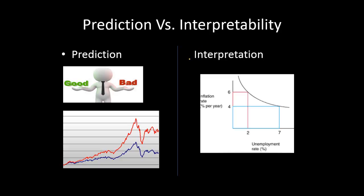When we build predictive models or any statistical model, the objective of building models could be categorized into two types, with two subtypes in predictions. Firstly, it could be to predict something, or it could be to interpret something.